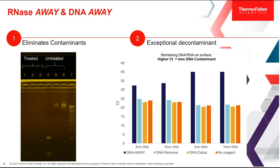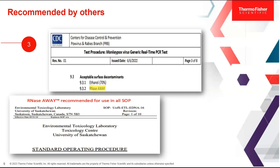The second reason is how exceptional DNA Away is at decontaminating DNA. Compared to other products on the market, the Ct values for DNA Away show significantly less DNA contaminant remaining. Additionally, DNA Away and RNAs Away are used in many protocols and SOPs in laboratories and institutions such as the U.S. Centers for Disease Control and Prevention, the Houston Forensic Sciences Center, and the Environmental Toxicology Laboratory at the University of Saskatchewan — confirming these are well-established, proven products.